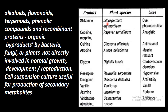The source plants for these secondary metabolites are: Lithospermum, Papaver, Cinchona, Atropa belladonna, Digitalis, Rauwolfia, Dioscorea, Vanilla, and Jasmine.